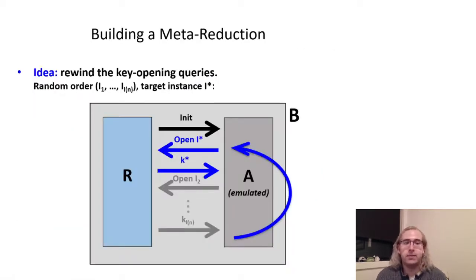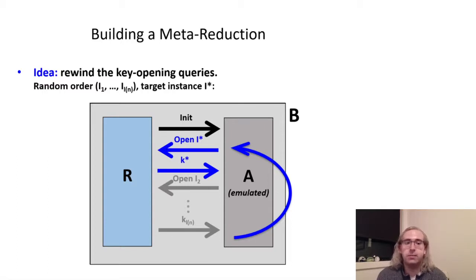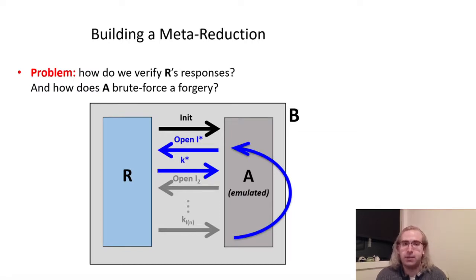So, bringing this back to the case of adaptive multi-user security of MACs, a first attempt at a meta-reduction would be to try applying the technique we just described to the key opening queries in the security game. Given L of N different instances of a MAC, B could make key opening queries to all but one of the instances in a random order, and then rewind, trying to query the key for the target instance in place of each of the other queries in turn, until R responds correctly, and finally using the extracted key to forge a tag for a random message. This sounds great at first, but two problems emerge pretty quickly. First, unlike signature queries which we could verify with the public key, we have no way to tell whether R is sending the correct responses to B's key opening queries from just the key alone, which is a problem when we need to extract the correct key from the target instance to produce our forgery.